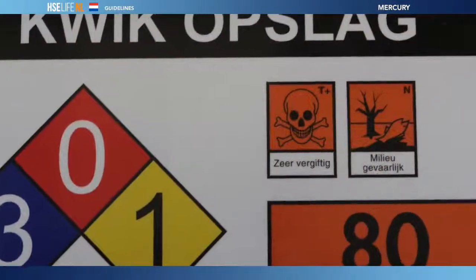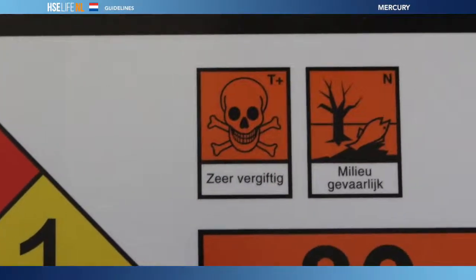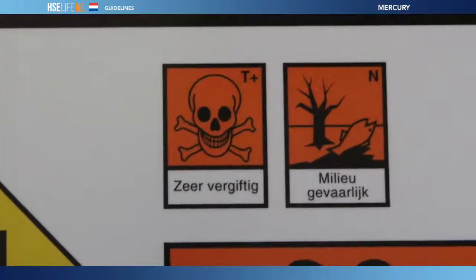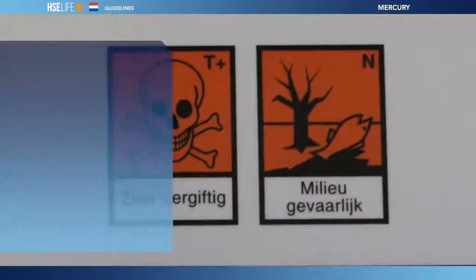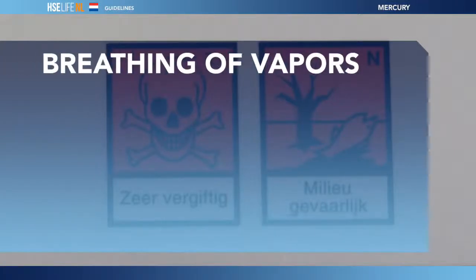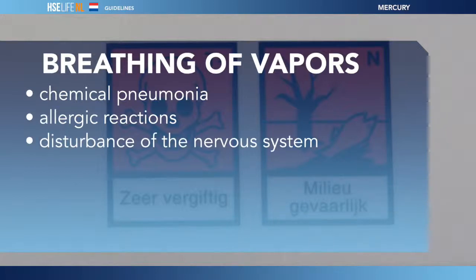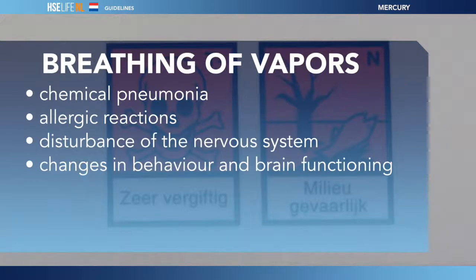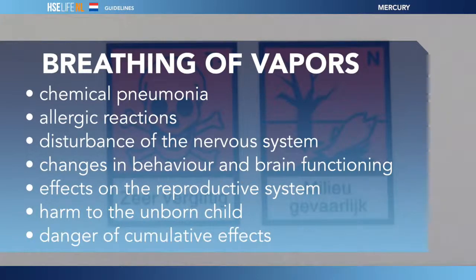One of the dangers associated with mercury is the breathing of vapours. These vapours are extremely toxic and may cause respiratory irritation, and breathing them can also have serious consequences — for example, chemical pneumonia, allergic reactions, disturbance of the nervous system, changes in behaviour and brain functioning. It also affects the reproductive system, can harm the unborn child, and there is a danger of cumulative effects.